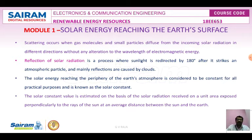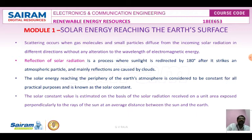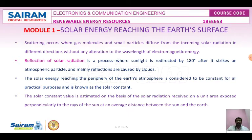The solar energy reaching the Earth's atmosphere is considered constant for all practical purposes — we call it the solar constant. Because of measurement difficulties, it is very difficult to achieve an accurate value of the solar constant. The solar constant value is estimated on the basis of solar radiation received per unit area perpendicular to the rays of the Sun.